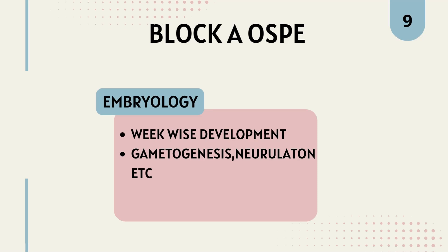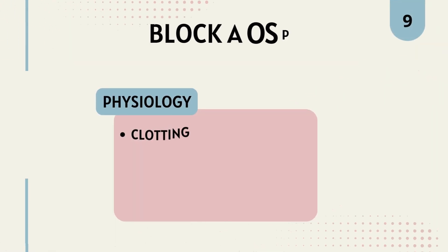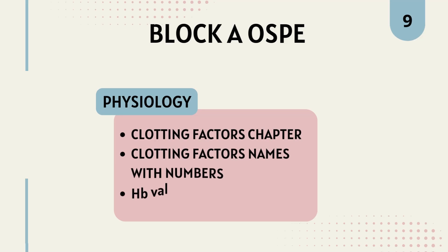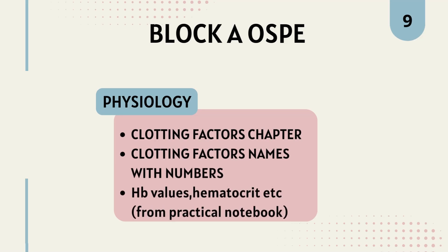For the subject embryology in Block A, you should be knowing about the week-wise development and processes like chemogenesis, neurulation, etc., and other major ones included in your block. For physiology, you should have a good grip on the clotting factors chapter, including clotting factor numbers.